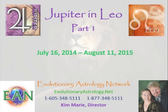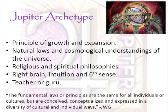Here we are with our material for tonight: Jupiter in Leo, Part 1. We're going to jump right in and work through the archetype of Jupiter. From the perspective of evolutionary astrology, Jupiter represents the principle of growth and expansion — moving forward, moving outward, becoming more than we were before. One of the things that falls under this principle is the desire to understand our world, our universe. Jupiter, its rulership of Sagittarius and the ninth house, is what EA calls natural laws and cosmological understandings of the universe.